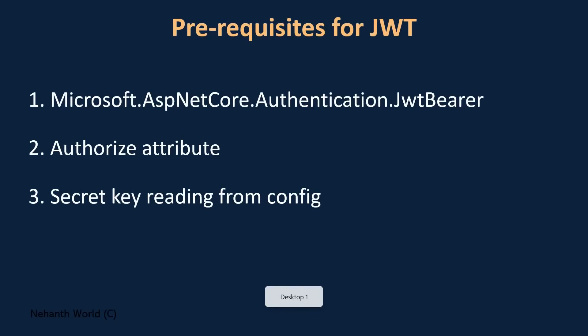The next step is the Authorize attribute. When we implement the JWT token based authentication process, there should be some infrastructure in our Web API application to configure which endpoint is a secure endpoint and which endpoint is an anonymous endpoint. For that, we need to know about the Authorize attribute.